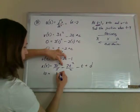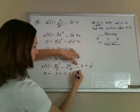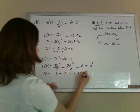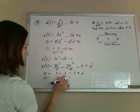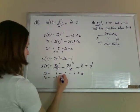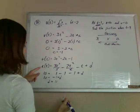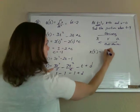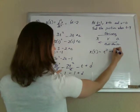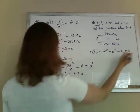1 cubed is 1, minus, those are canceling, so 1 squared is 1, minus 1 plus d, so that's 10 equals minus 1 plus d. So d is 11, which makes our position function t cubed minus t squared minus t plus 11.